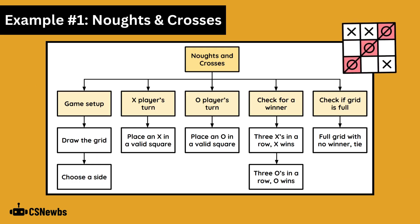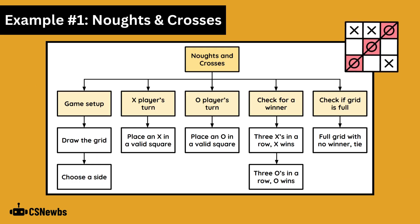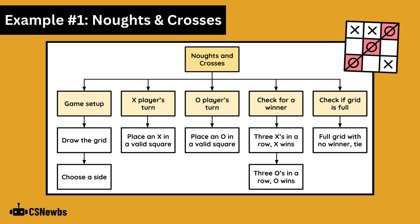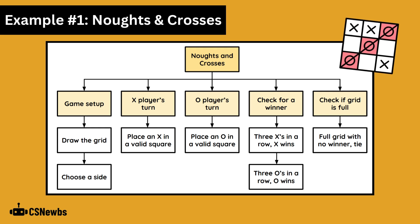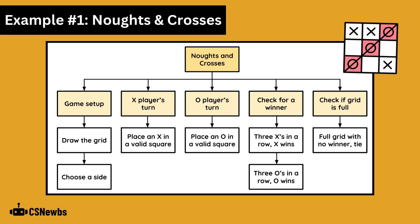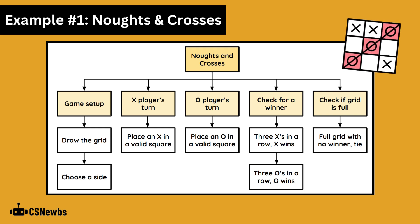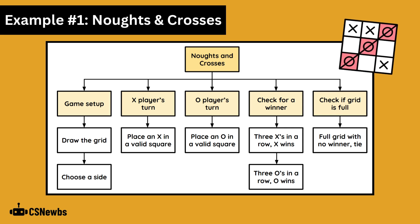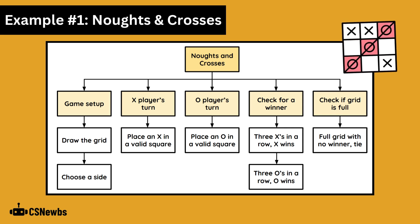Here is an example of a structure diagram showing the subsections of a game with noughts and crosses, also known as tic-tac-toe. It does not show the flow of data, but displays how the program is broken down into different subsections and further processes within these subsections.